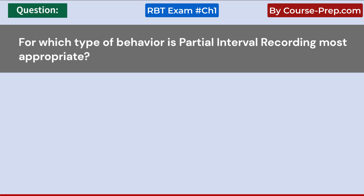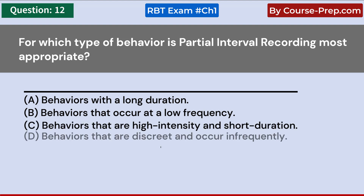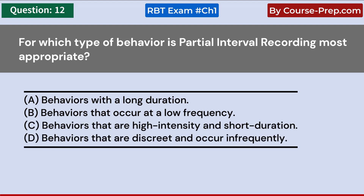For which type of behavior is partial interval recording most appropriate? A. Behaviors with a long duration. B. Behaviors that occur at a low frequency. C. Behaviors that are high intensity and short duration. D. Behaviors that are discrete and occur infrequently. Answer C: Behaviors that are high intensity and short duration.